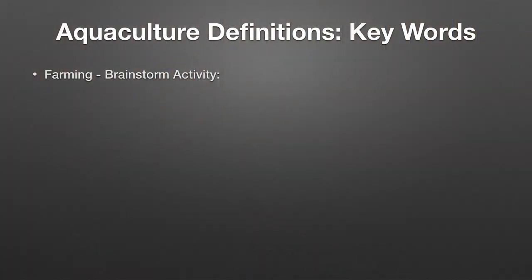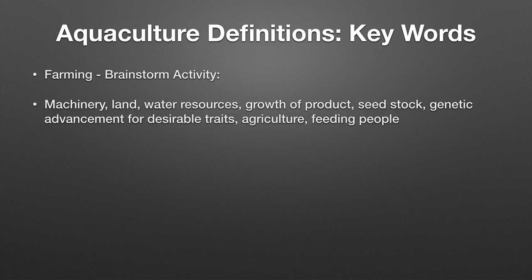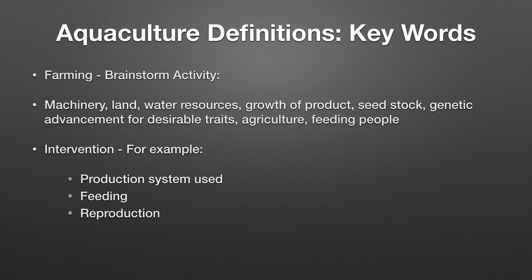Now that we've seen the business aspect of tilapia aquaculture, let's take a time out for brainstorming. Think about the word 'farming' and write down any word that comes to mind. Examples might include machinery, land, water resources, or feeding people — anything is valid in a brainstorm session. Another major aspect of aquaculture is intervention to increase control over productivity and the biology of the animals.